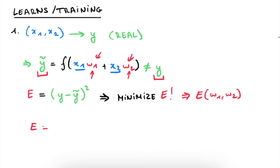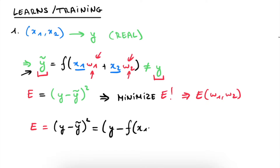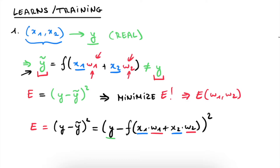Let's see exactly what this function looks like. e = (y − f(x1·w1 + x2·w2))². We see that e is indeed a function of w1 and w2, with x1, x2 as fixed input training data and y as fixed output data. The only variables are w1 and w2. To minimize e, we take the partial derivative of this function with respect to both weights w1 and w2.